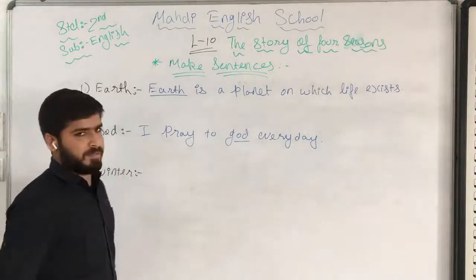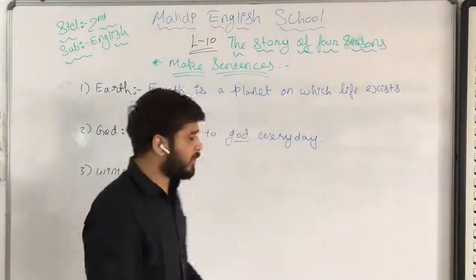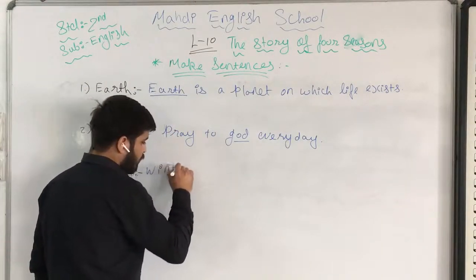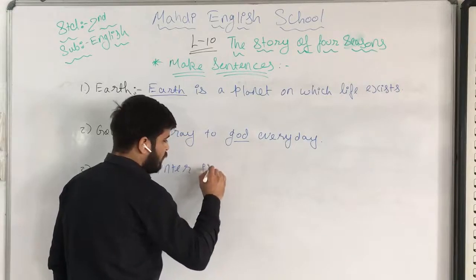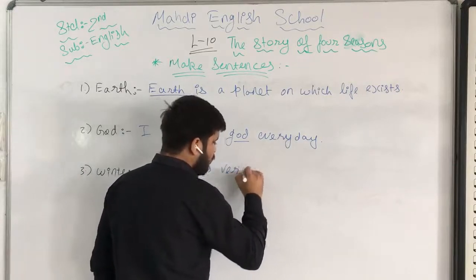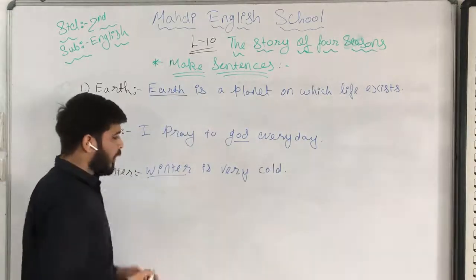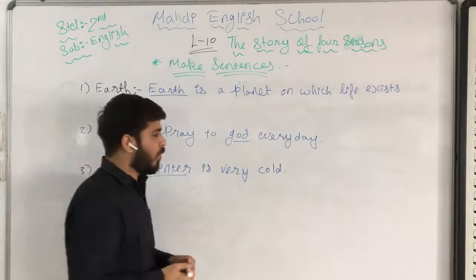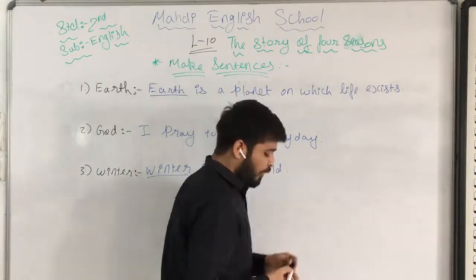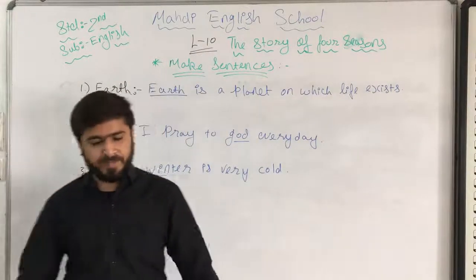Number three — winter. What happens in winter? You feel very cold. So I can write: Winter is a very cold season. Whatever you feel, you can write, you can make a sentence of your own. It should just be grammatically correct. If you have not written your own sentences, please write them down.